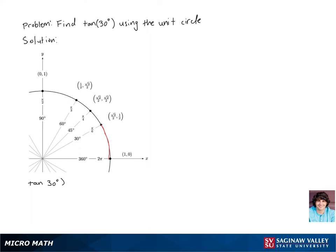So tangent of 30 degrees equals 1 half over root 3 over 2, and then we remember that dividing by a fraction is the same as multiplying by its reciprocal.